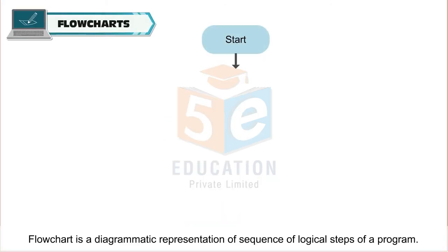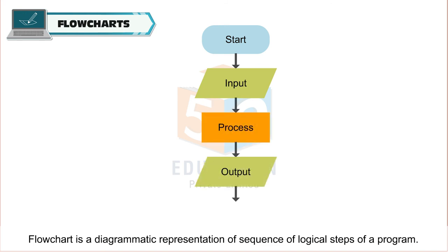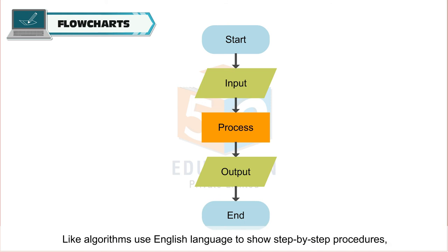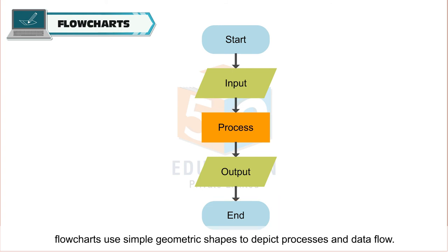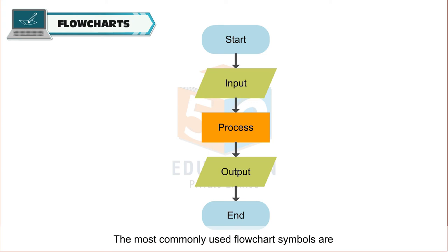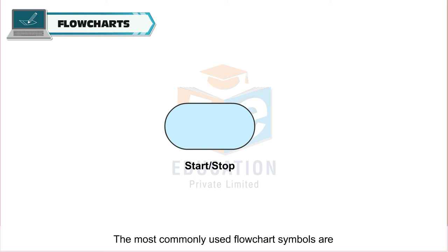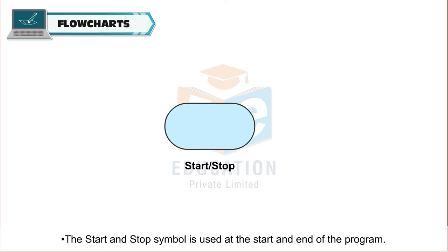A flowchart is a diagrammatic representation of the sequence of logical steps of a program. Like algorithms use English language to show step-by-step procedures, flowcharts use simple geometric shapes to depict processes and data flow. The most commonly used flowchart symbols are: the start and stop symbol, used at the start and end of the program.